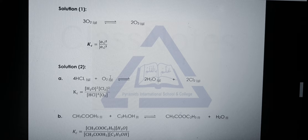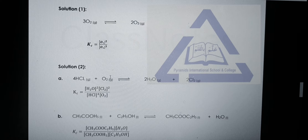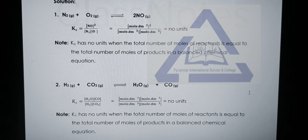Number two is the reaction between hydrochloric acid and oxygen for the production of water and chlorine. Again, write the products in the numerator and the reactants in the denominator raised to the power of their moles, with concentrations written in square brackets. In self-assessment exercise 9.3, you have to write units for the equilibrium constant.